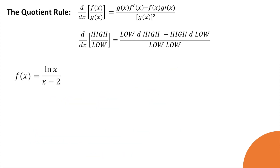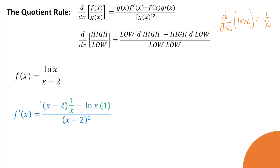Before we dive into this one, remember that the derivative of ln of x is 1 over x. Pause the video and see if you can figure this one out on your own. Here's the low function times the derivative of the high — the derivative of ln x is 1 over x — and then high, the derivative of x minus 2 is 1, over low-low.